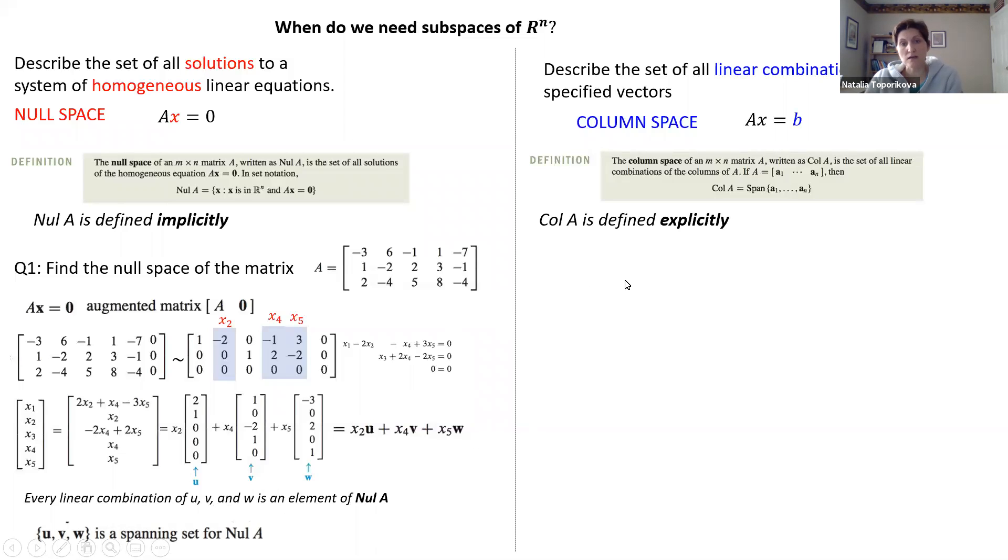But column space is defined explicitly because we are just given columns of the matrix. Of course, we can write them down. So, for example, let's look at the column space for the matrix A given here. And let's just start simple and find just the dimension of our vectors which belong to column space. And it's good to remember that our column space would be the right-hand side of a non-homogeneous matrix equation.